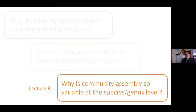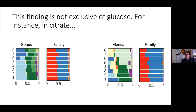Today's question is why community assembly is so variable at the species or genus level. I've made this lecture a bit shorter to allow more time for questions about all three lectures. I also want to preface this by saying that the pattern of strong family-level conservation despite substantial genus/species-level variation is conserved across all nutrients we've studied so far, not just glucose — as shown here with citrate and examples from two different inocula each propagated eight times.